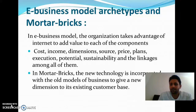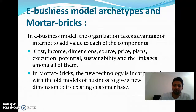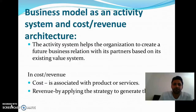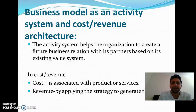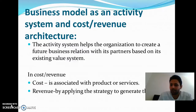In motorbikes, new technology is incorporated with old models of business to give new dimensions to its existing customer base. In the business model as an activity system and cost revenue architecture, the activity system helps the organization create future business relations with its partners based on its existing value system. The cost is associated with products or services, and the revenue is generated by applying strategy to cover that cost.